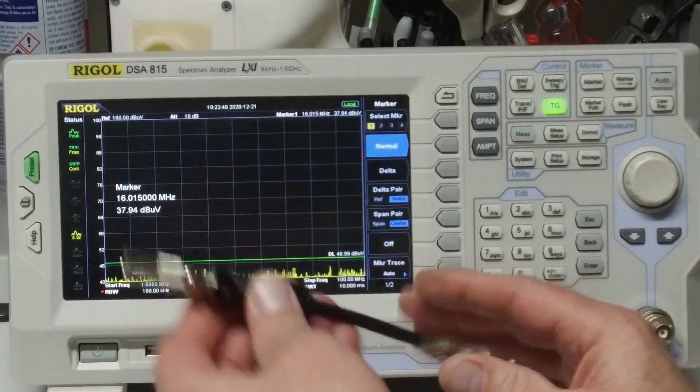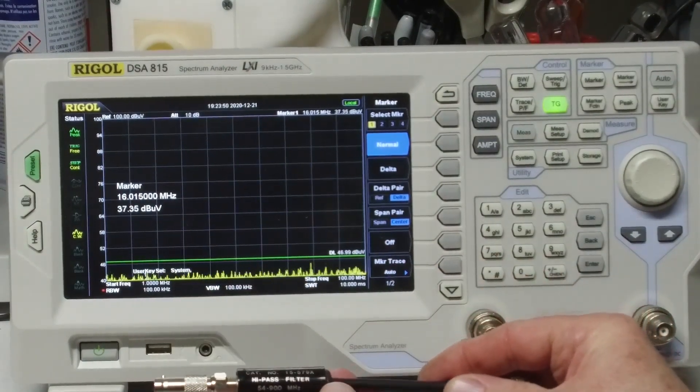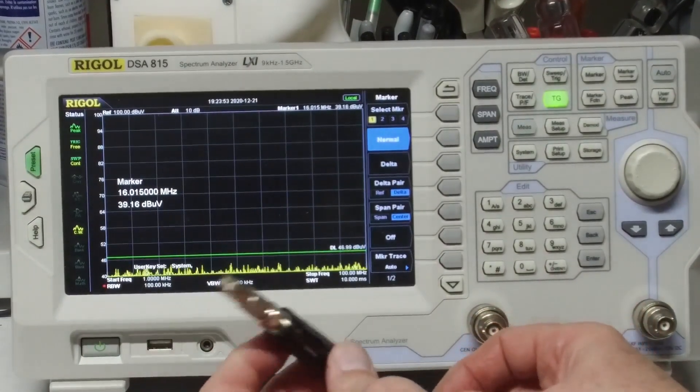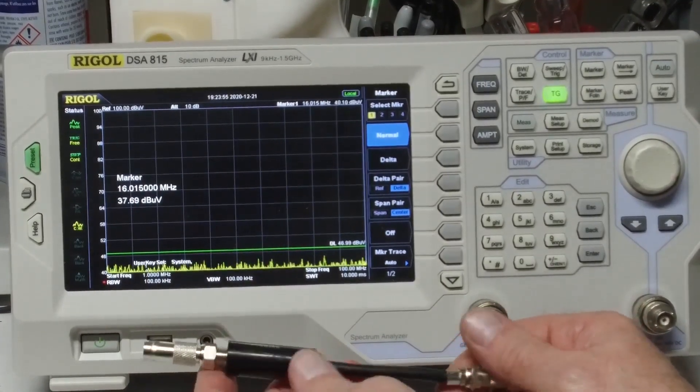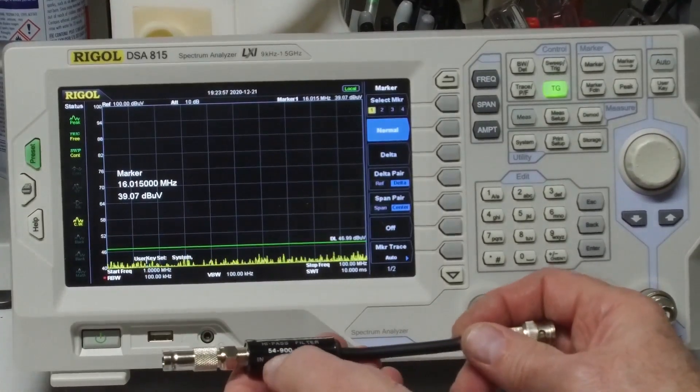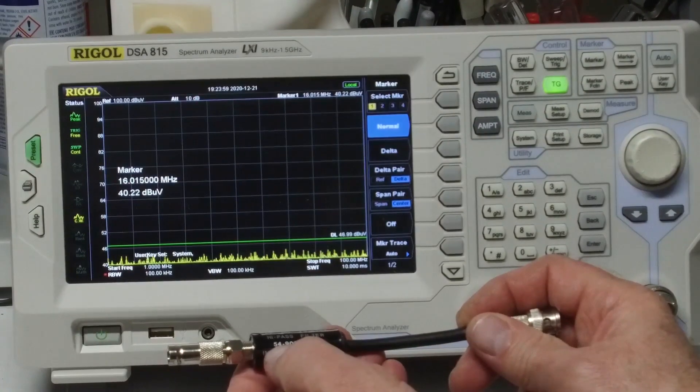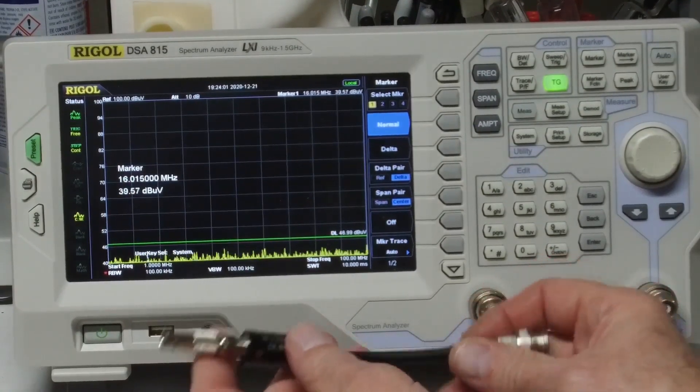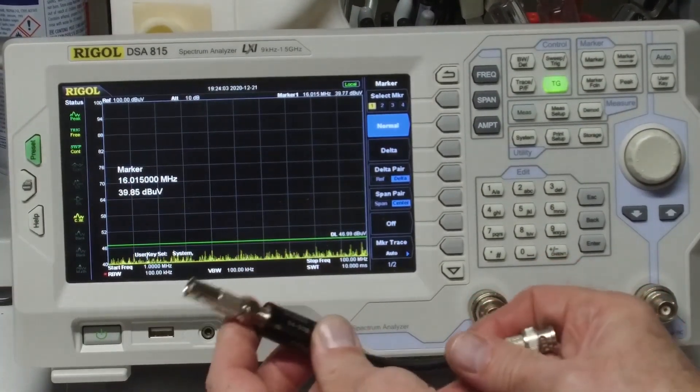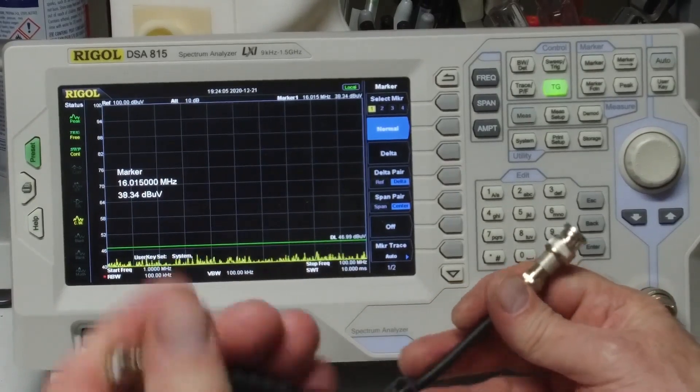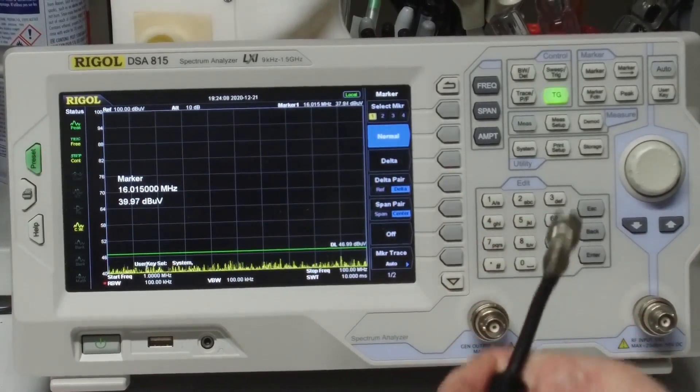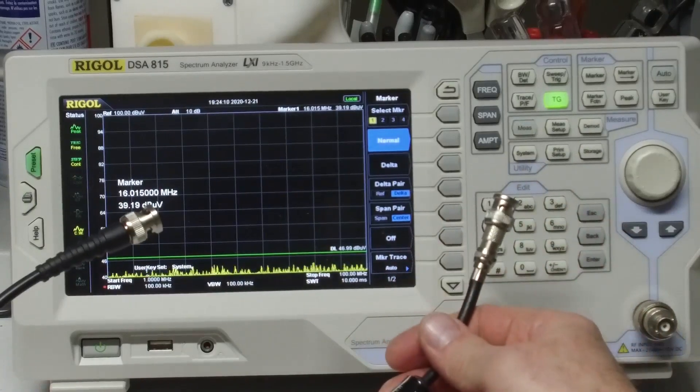This is a high pass filter that I had laying around for a cable TV, and it says it starts at 54 megahertz. So we could hook this guy up and see what it really does. So, OK, here's the setup.